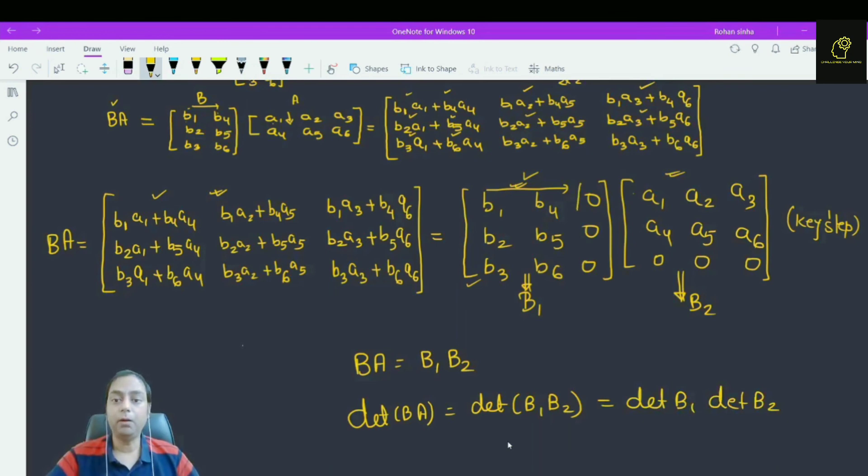And what is the formula of determinant of B1 B2? It is same as determinant of B1 into determinant of B2. Now, what is determinant of B2?